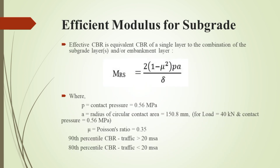Sometimes there shall be different CBR values for the subgrade and the embankment below the subgrade. In that case, effective modulus must be calculated using the equation mentioned on screen, in which delta is the maximum deflection calculated through analysis in IITPAVE with the following data: single wheel load of 40 kN, contact pressure of 0.56 MPa for the linear elastic layer system, with which the radius of the circular contact area can be determined as 150.8 mm since the area equals the ratio of wheel load to pressure. The elastic or resilient moduli of the subgrade and the embankment layer calculated from the resilient modulus equation are considered.